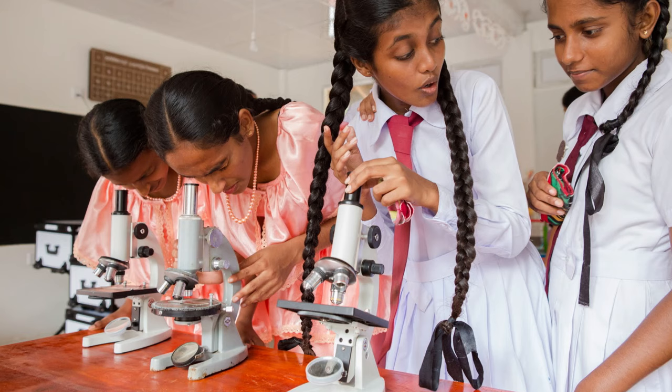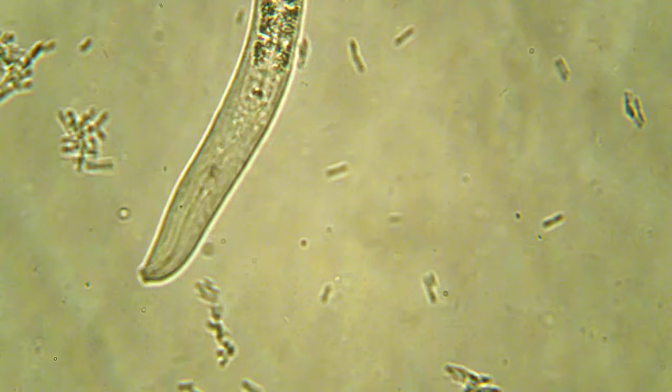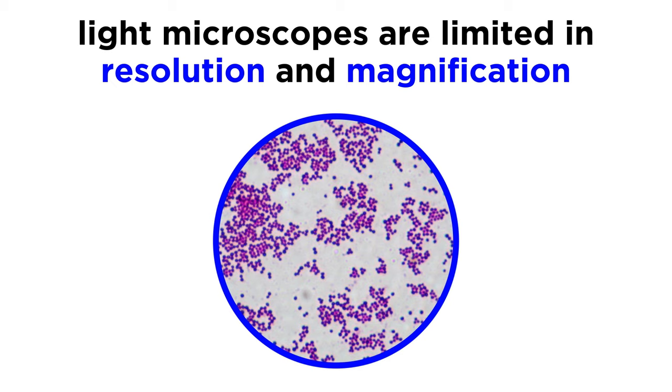Light microscopes are easy to use and also relatively inexpensive, making them common in high school and undergraduate labs. Also, with a light microscope, one can visualize living specimens over time, with a low likelihood of damaging the specimen.